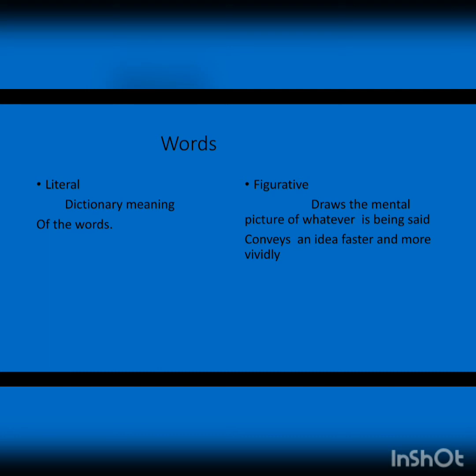ہم پہلے دیکھتے ہیں کہ literal meaning کون سے ہوتے ہیں. Literal meanings are the dictionary meaning of the words. یہ dictionary meaning جو ہوتا ہے words کا اسے ہم literal meaning کہتے ہیں. اور جو figurative meaning ہوتا ہے وہ it draws the mental picture of whatever is being said. Figurative language آپ کے mind میں ایک picture draw کرتی ہے، and it conveys an idea faster and more vividly، جس کی وجہ سے آپ کے mind میں idea بہت زیادہ clearly اور جلدی سمجھ آ جاتا ہے۔